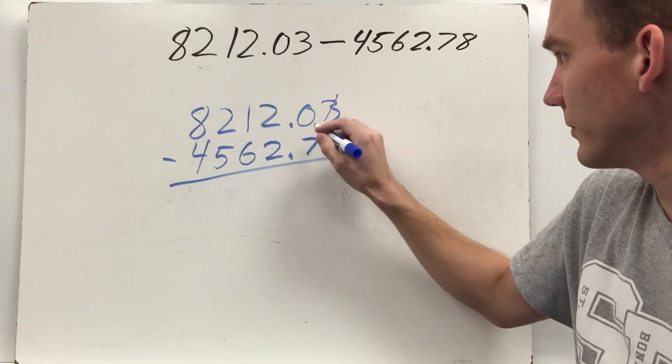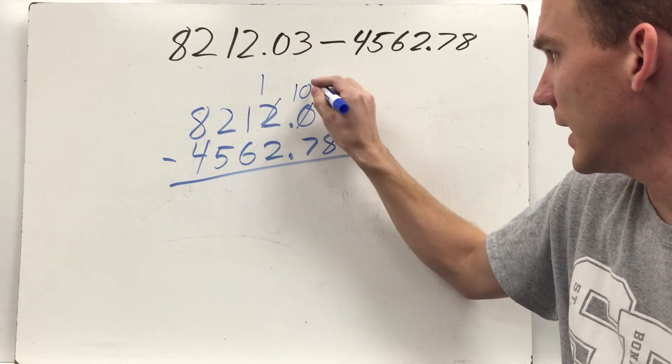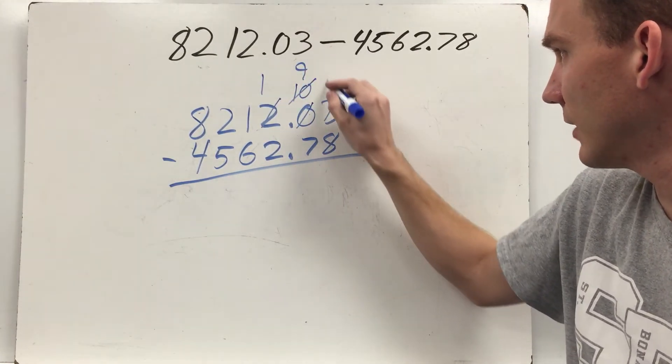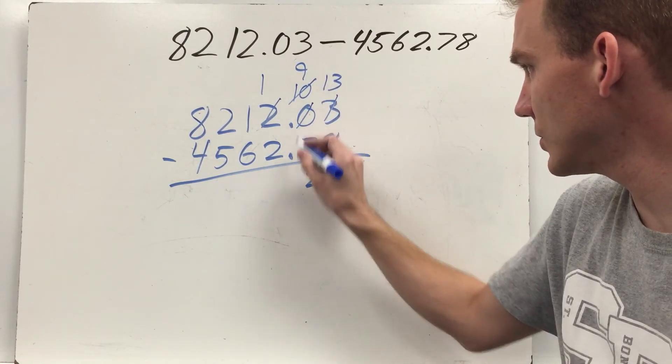Three minus eight, can't do, need to regroup, can't regroup here, so we'll go to the one. This becomes a ten, then it becomes a nine. Now I have thirteen. Thirteen minus eight is five. Nine minus seven is two.